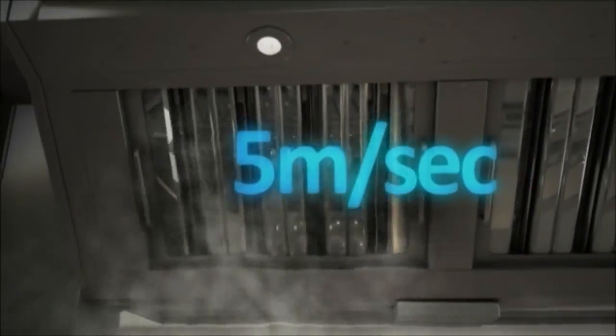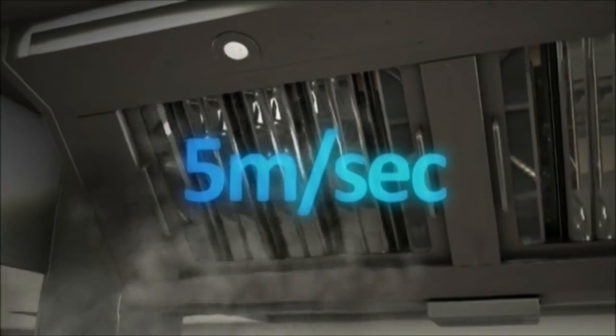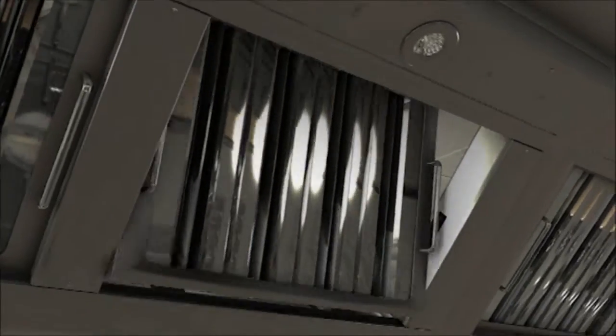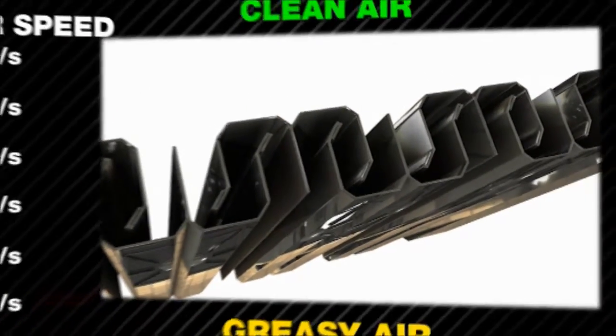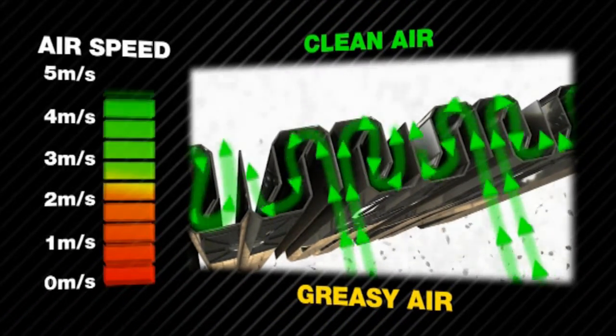Grease baffle filters used in commercial kitchens work on the principle that air should pass through the filter at a constant speed of 5 meters per second. As the air mixed with grease particles from cooking passes through the filter, it undergoes a number of abrupt changes in direction.